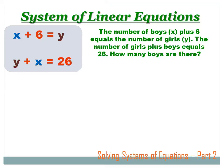The number of boys, which we'll call X, plus 6 equals the number of girls, which we'll call Y. The number of boys plus 6 equals the number of girls. The number of girls plus boys equals 26. The number of girls plus the number of boys equals 26.